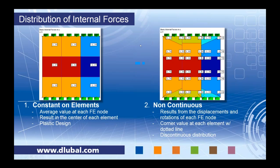Let me explain these four distribution options from the PowerPoint. 'Constant on elements' averages the value at the four corner nodes of each FE element and places the result in the middle of that element — each element colored in its own cell with no contours between elements. This is ideal for plastic design. The program attributes the load to all FE elements; if any element exceeds 50 KSI, it reduces that element's stiffness so the load redistributes to adjacent elements, continuing until the plastic effect is fully distributed.